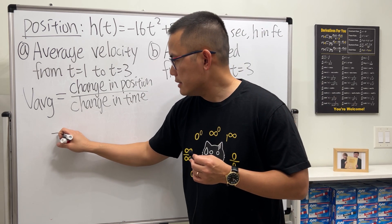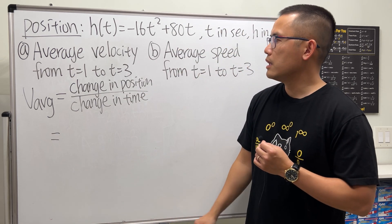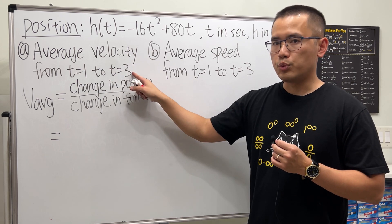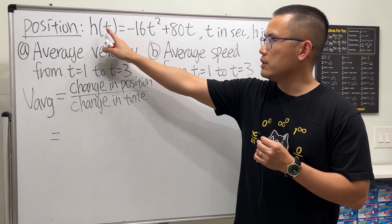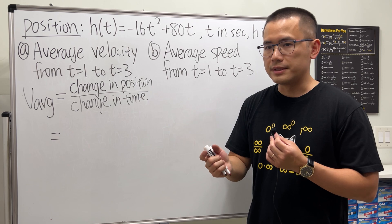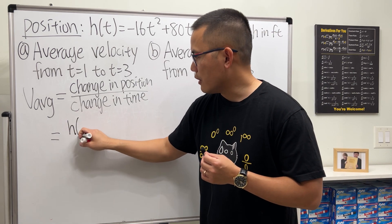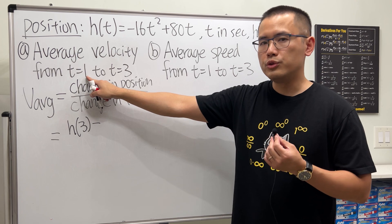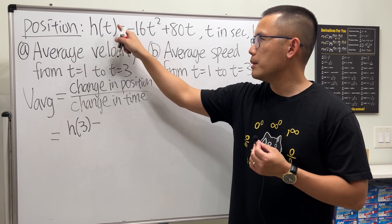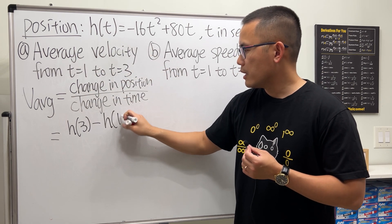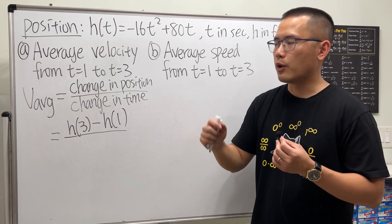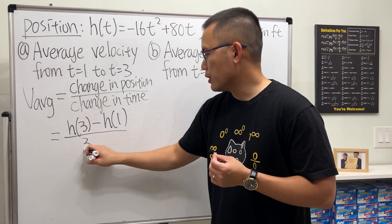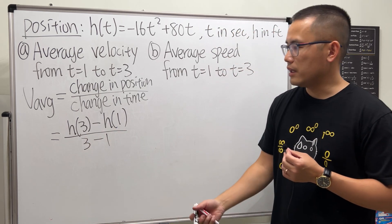So in this case, what we will get is the final time when t equals 3, we have to plug that into the function to get the final position, so it's h(3), and then minus the initial position which is when t equals 1, put it here, and then divided by the changing time from 1 to 3, which is just 3 minus 1, and that's it.